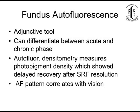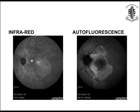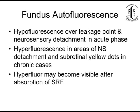Moving to fundus autofluorescence: it is adjunctive and can differentiate between acute and chronic phases. Autofluorescence densitometry software, if available in the imaging machine, can measure photopigment density, showing delayed recovery after subretinal fluid resolution. The autofluorescence pattern usually correlates with FA very well. In the infrared photograph you can see a track going downward, not so visible in infrared. Hyperfluorescence of the leakage point and neurosensory detachment is seen in the acute phase. In chronic cases, hyperfluorescence is seen in areas of neurosensory detachment and subretinal yellow dots, and after fluid absorption the lesion may become hyperfluorescent.